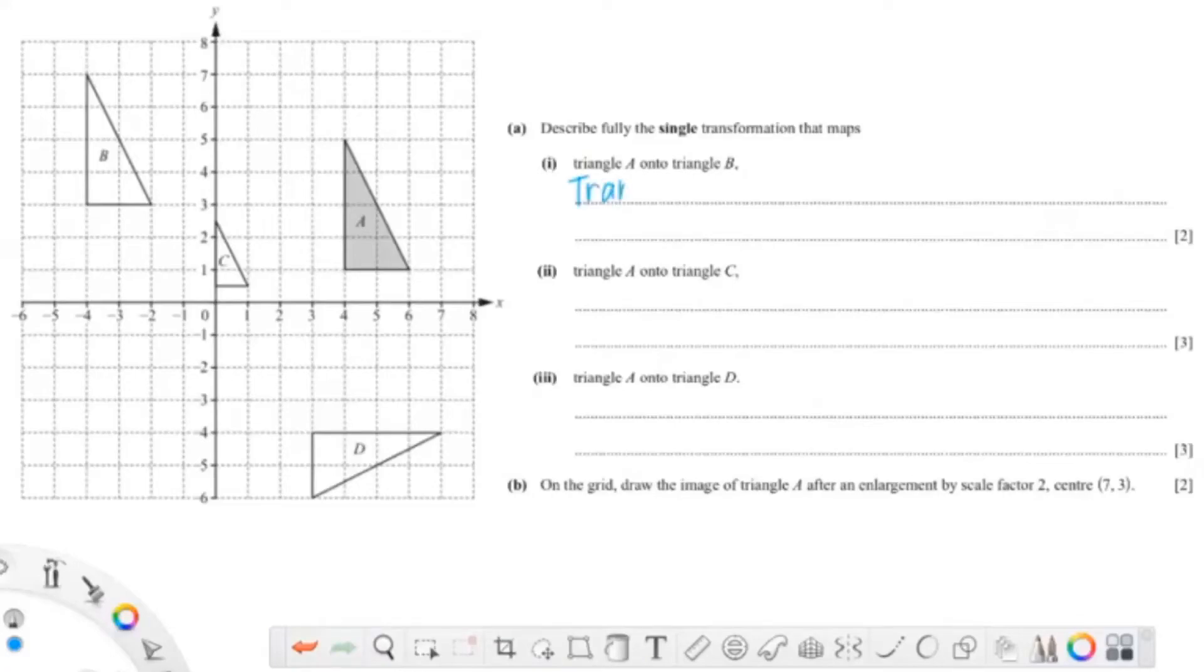Okay, so as you can see, this A onto B is a translation. Since it's 2 marks, we had to find the vector, which is 1, 2, 3, 4, 5, 6, 7, 8 units to the left—so that's negative 8—and 2 units up, which is 2.